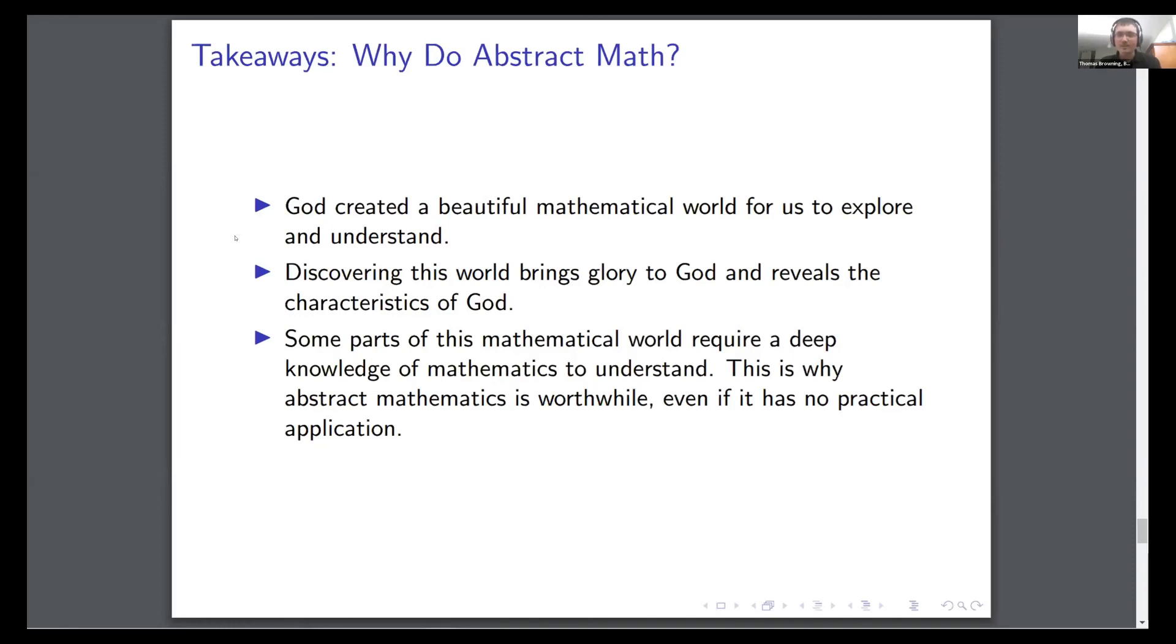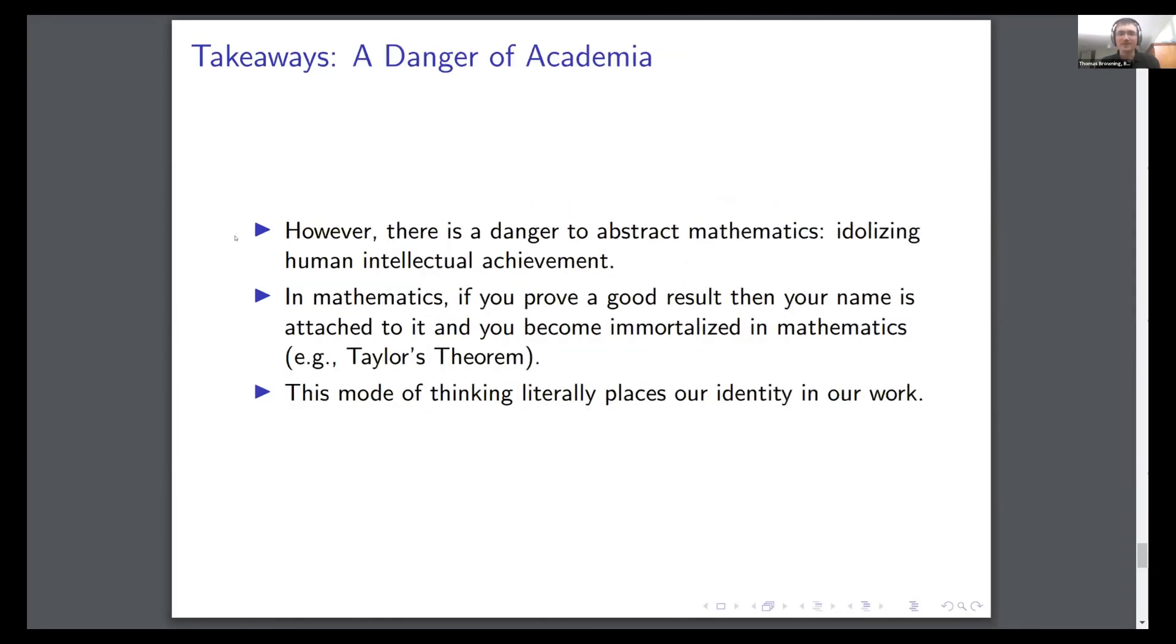Now there is a danger to abstract mathematics, which is that it seems to be accumulating knowledge for knowledge's sake. It's just kind of proving a theorem, proving a theorem, and it's just accumulation of knowledge that idolizes human intellectual achievement. And I think this is a real danger, particularly in mathematics, but also in the rest of science. In mathematics especially, if you prove a really good theorem, you get your name attached to it. If you've taken calculus, you might have heard of Taylor's theorem. And this is kind of dangerous as Christians, because what it does is it places our identity in the work that we do, and that's a dangerous thing.